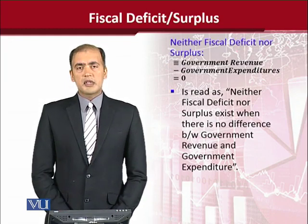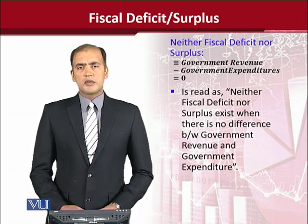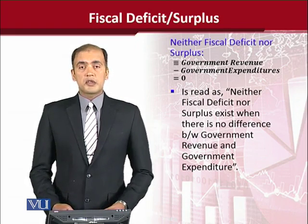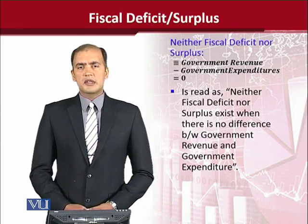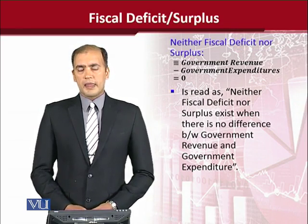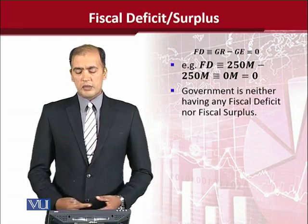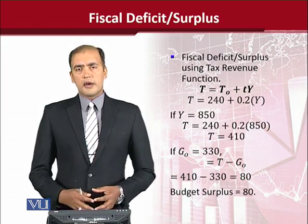Neither Fiscal Deficit nor Fiscal Surplus — this is another situation which is very unlikely because it is a very rare situation where the values of Government Expenditure and Government Revenue are equal. But if this happens, it is a possibility, though with a very low probability, but still it can happen. We can say that it is neither Fiscal Surplus nor Fiscal Deficit. The difference of the two values in this numerical example is 0, meaning there is neither a surplus nor a deficit.